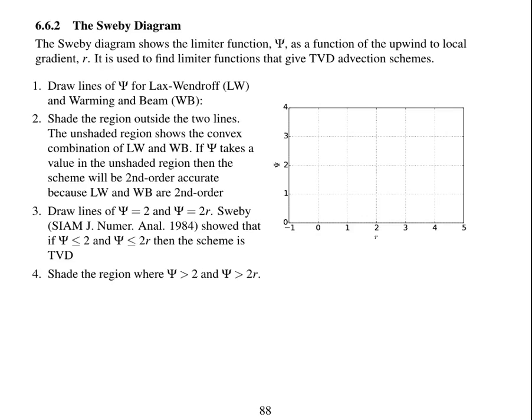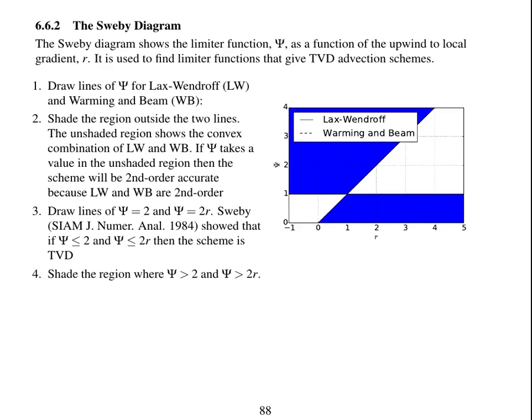So shade the regions where Ψ is greater than 2 and greater than 2r. So here are the lines for Lax-Wendroff and Warming and Beam. I've shaded the region outside the convex combination. There are these TVD limits, 2 and 2r.